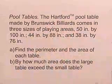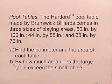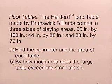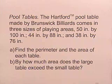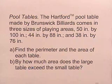In this application, we're going to be looking at perimeter and area of pool tables. The Hartford pool table made by Brunswick Billiards comes in three sizes of playing areas: 50 inches by 100 inches, 44 inches by 88 inches, and 38 inches by 76 inches. We're asked to find the perimeter and the area of each table, and part B, by how much area does the large table exceed the small table.